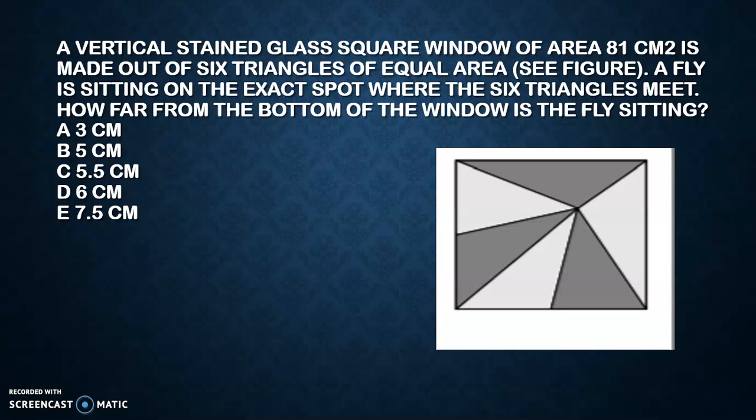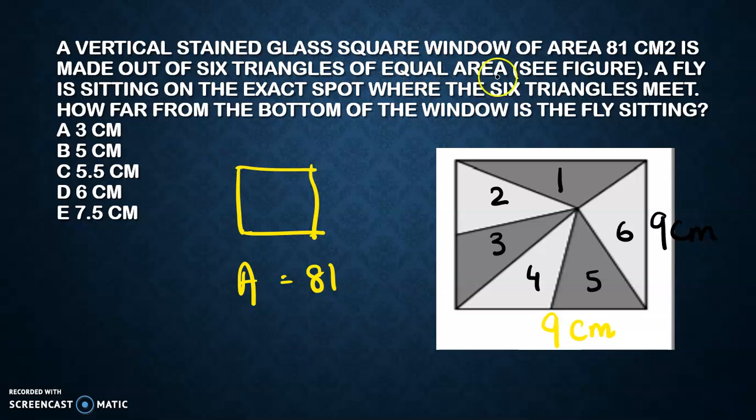Now see the last question for today. This is a vertical stained glass square of area 81 centimeter square. When we talk about a square and I'm saying the area is 81, straightforward you can think that this will be 9 centimeter and again this will be 9 centimeter. Now how many triangles are there? One, two, three, four, five, six.